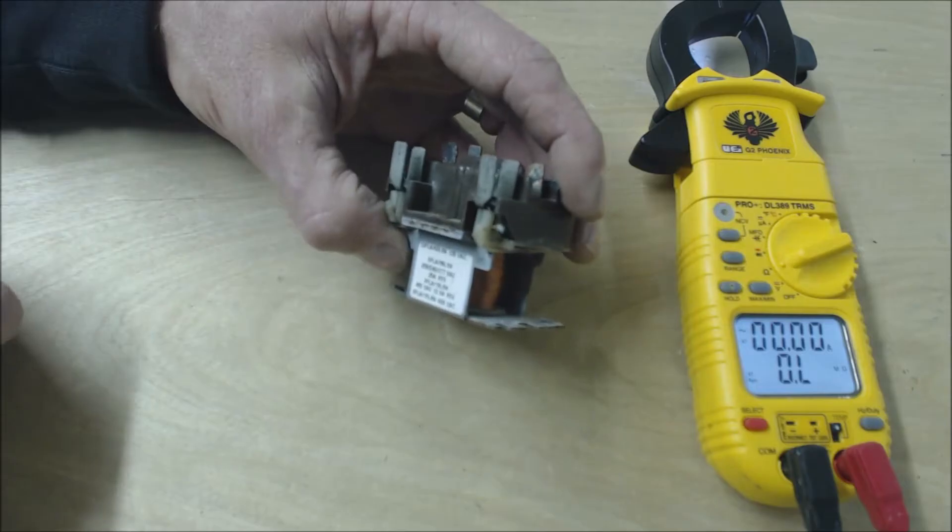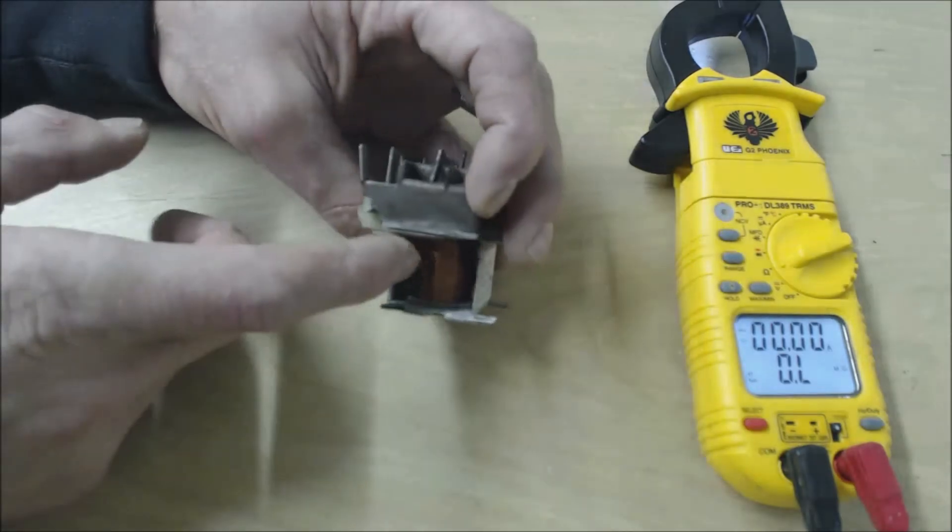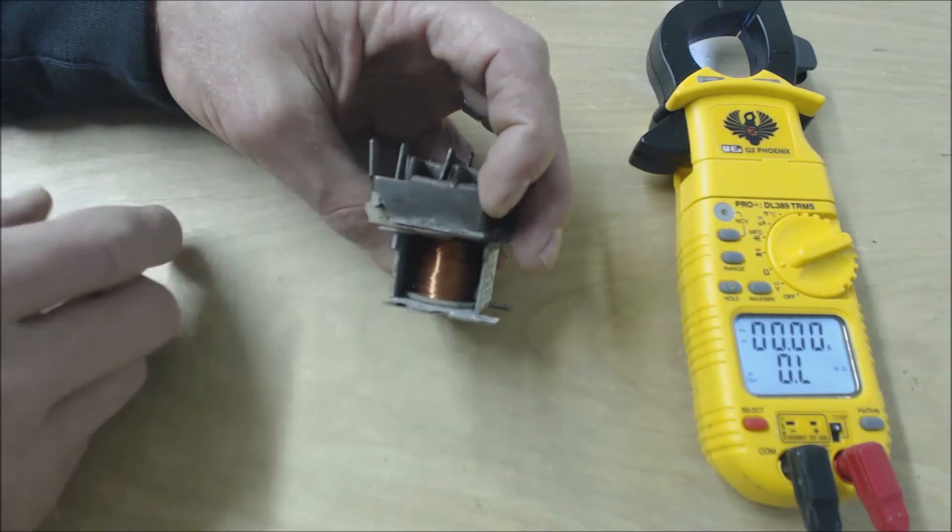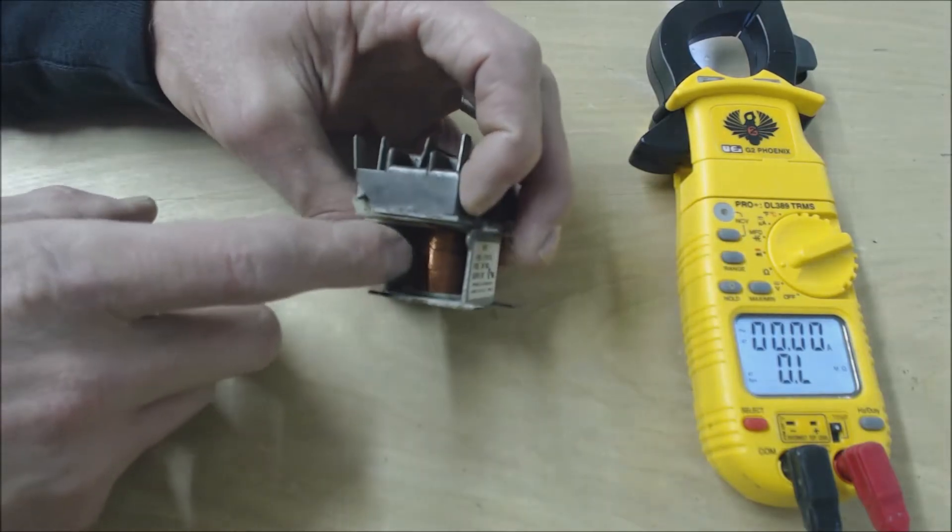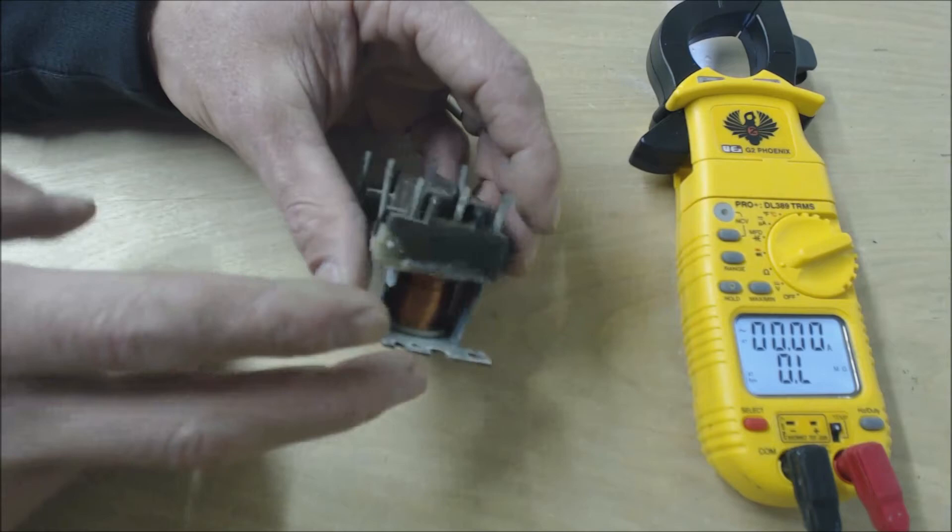You shouldn't have 0.0 ohms of resistance because that would mean that the coil is burned together. OL over limit would mean that this coil is burned apart.